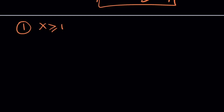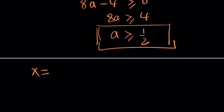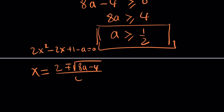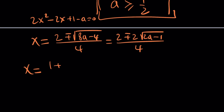Since we know x is greater than or equal to 1, let's start with that. Using the quadratic formula on 2x² minus 2x plus 1 minus a equals 0, we get x equals negative b plus or minus the square root of delta — which is 8a minus 4 — all divided by 4. Simplifying by taking out a factor of 4 inside the radical and dividing by 2, we get x equals 1 plus or minus the square root of (2a minus 1), all over 2. These are the two candidate solutions.